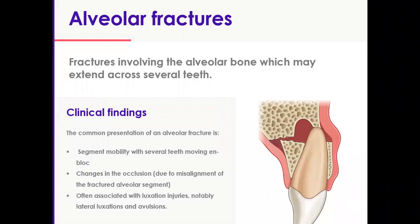Alveolar fractures are injuries that involve the alveolar bone, which may extend across several teeth. They are probably the scariest to see, but relatively simple to manage and very satisfying to treat. Clinical findings include segment mobility with several teeth moving together. You typically hold one tooth and gently move it back and forth and observe the entire segment moving. Changes in occlusion due to misalignment and movement of the fractured alveolar segments, and generally association with luxation injuries such as evulsions and lateral luxations, are part of the clinical findings. We are talking about alveolar fractures — the fracture of the alveolar process. The bone is surrounding and supporting the roots.